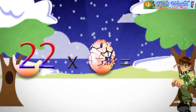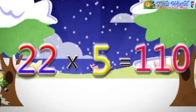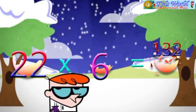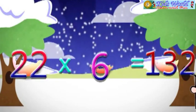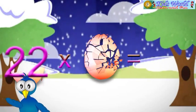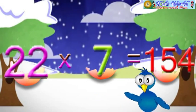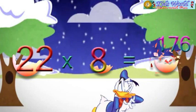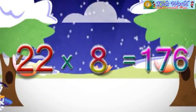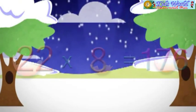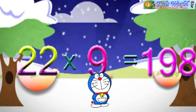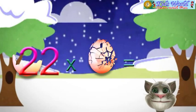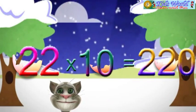22 into 5 is equal to 110. 22 into 6 is equal to 132. 22 into 7 is equal to 154. 22 into 8 is equal to 176. 22 into 9 is equal to 198. 22 into 10 is equal to 220.